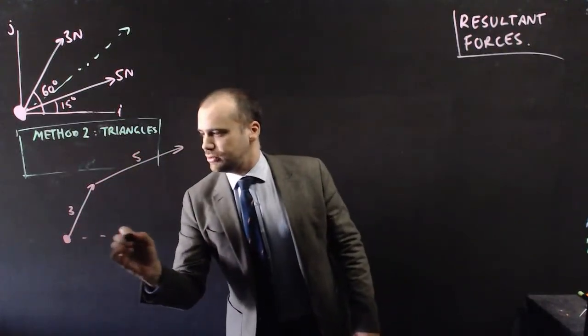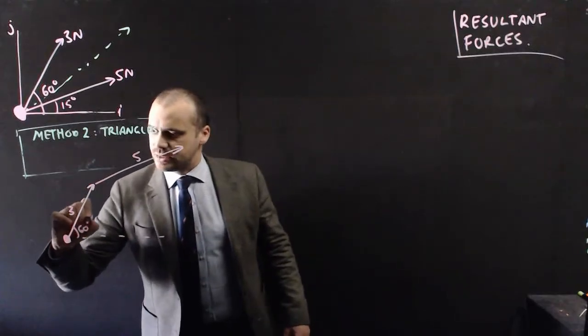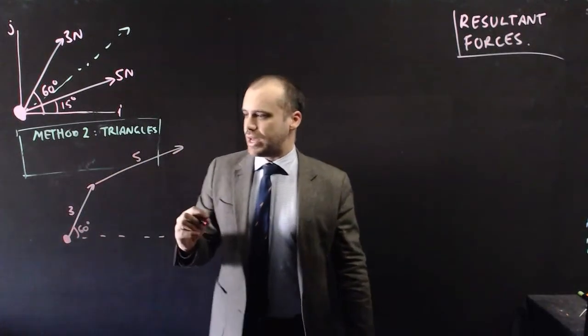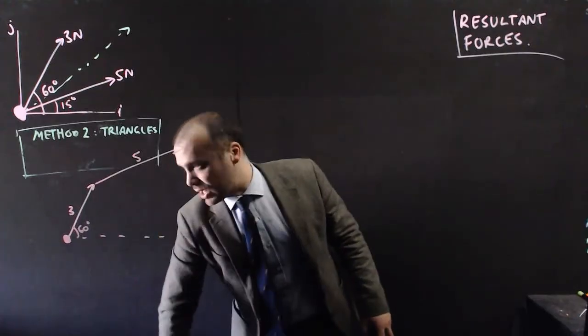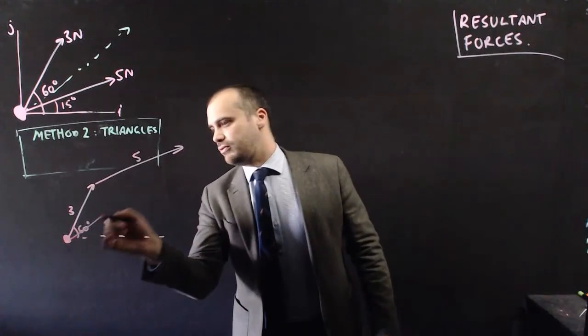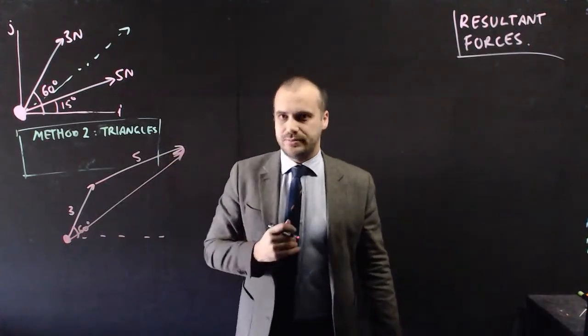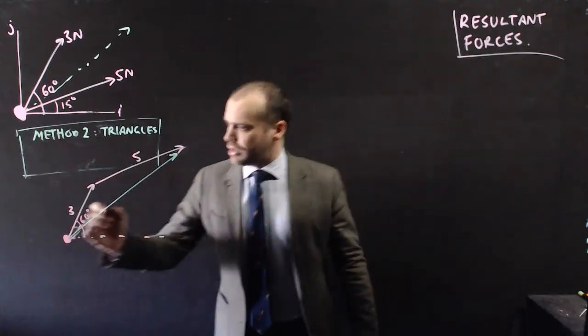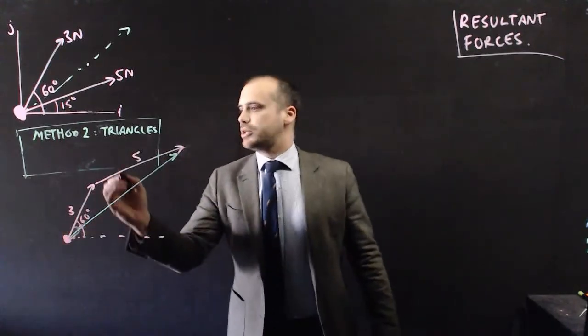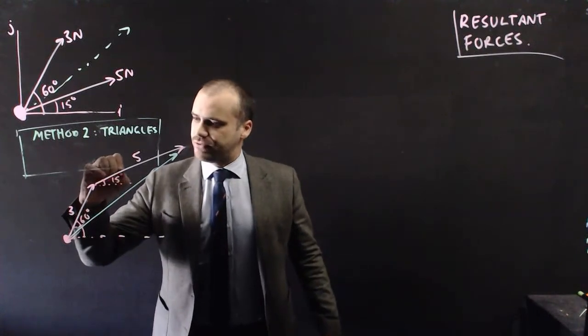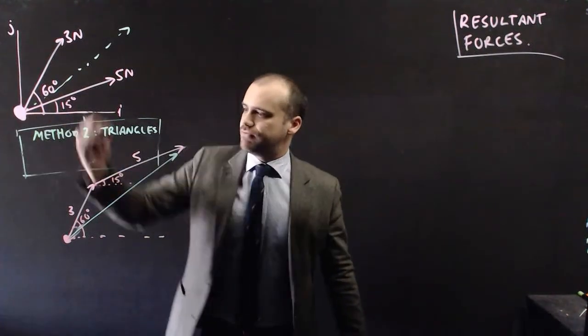3 newtons in this direction, where this angle is 60 degrees, and 5 newtons in that direction, and it's going to give you a resultant vector in that direction right there. All right, that's a little bit better green here. All right, if that's a 60 degree angle, what else do we know? We know that this bit here is a 15 degree angle, because I've just pulled this vector up there.